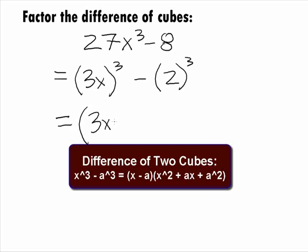This will factor by taking the difference of the two bases, which would be 3x minus 2, times taking that first base and squaring it, getting 9x squared.